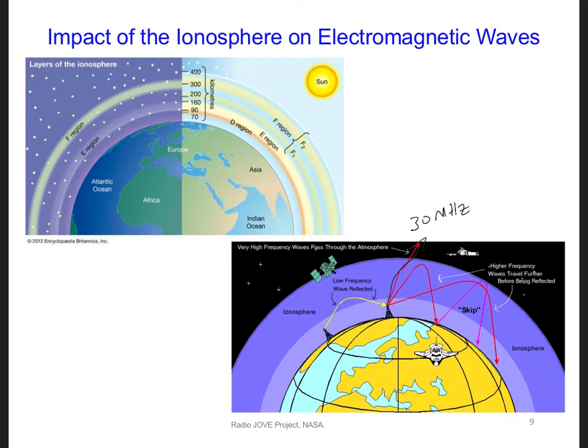However, below about 30 megahertz, the ionosphere starts to refract the electromagnetic waves to the point where they reflect back down to the Earth.